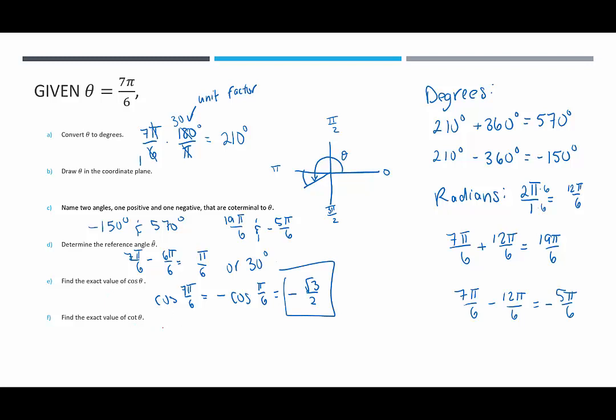Part F, finding cotangent of theta. Tangent or cotangent in quadrant 3 is positive. I'm going to do tangent and then take the reciprocal since we're usually more familiar with tangent. Tangent of 7 pi over 6 is going to be the same value as tangent of pi over 6, which is root 3 over 3. We're going to take the reciprocal for our cotangent, so we have 3 over root 3. Now we need to rationalize the denominator, and when we do that, we end up with 3 root 3 over 3, which simplifies to root 3. So the exact value of cotangent of theta is the square root of 3.